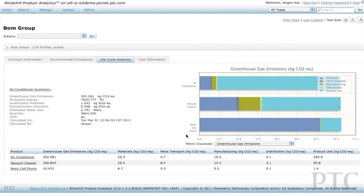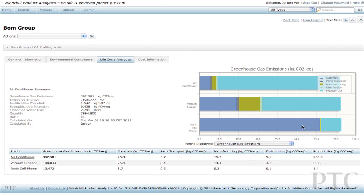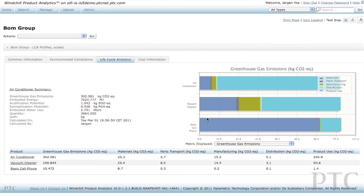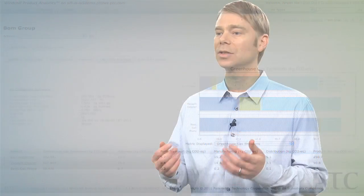Every product has its own impact profile. A cell phone's impact, for example, is mostly from its use of materials. The majority of a vacuum cleaner's impact comes from not only the materials it is made of, but also from the way it is made and the energy it uses.